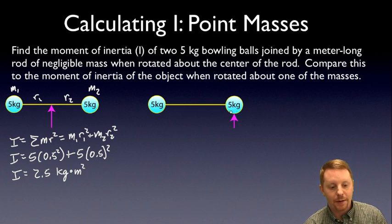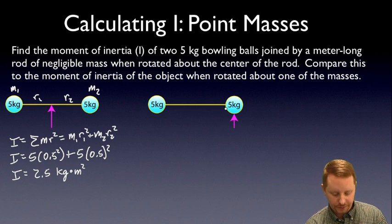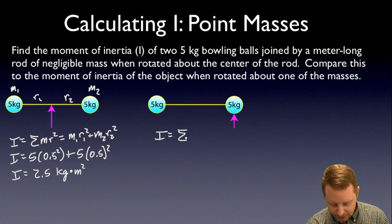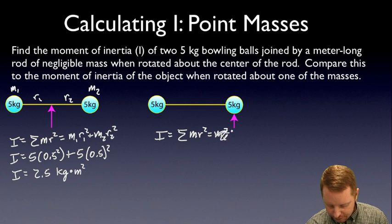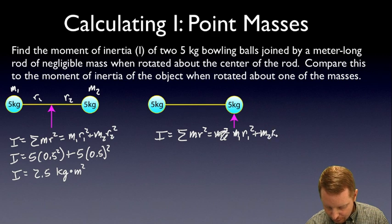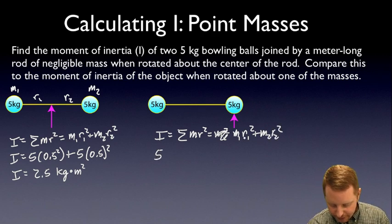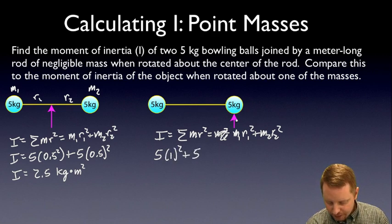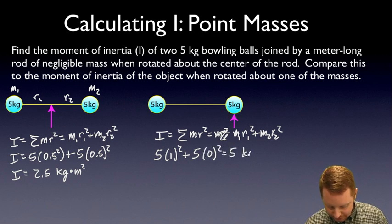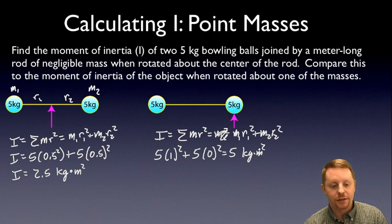Now rotating the same object about its end, we're expecting a larger moment of inertia — it'll be harder to accelerate rotationally. Using the same formula, I equals m1 r1 squared plus m2 r2 squared: m1 is 5 kg and its distance from the axis is 1 meter, so 5 times 1 squared; m2 is 5 kg but its distance from the axis is 0, so 5 times 0 squared. That gives 5 kilogram meters squared — twice as large a moment of inertia just by moving the axis of rotation.